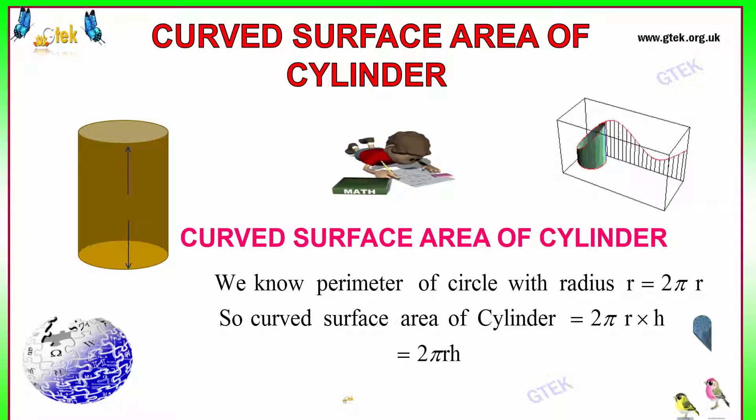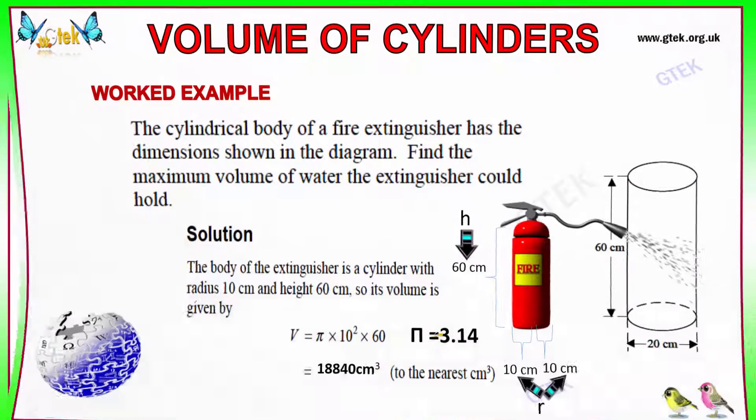Let's move on to the curved surface area of the cylinder. The curved surface area of the cylinder is 2πr is the radius of a circle and it's of height H. So 2πr is the area of the circle and it is of height H. The formula is 2πr into H.